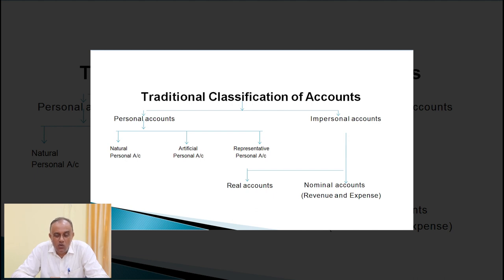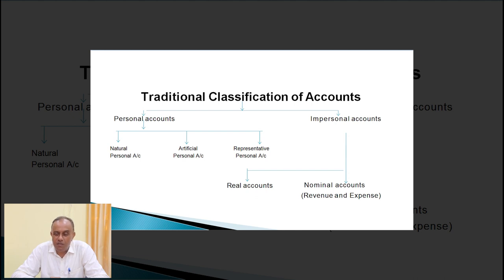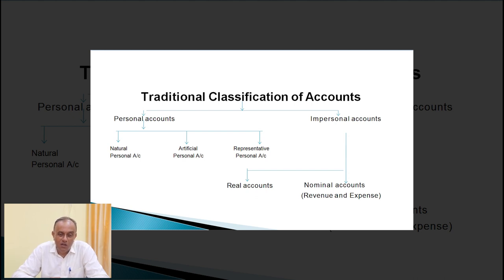Real accounts are those accounts which relate to assets, things, and property. There are two types of real accounts: some are visible or tangible, and some are intangible or not visible, but their value is accounted for. For example, land, building, plant, and machinery are examples of tangible and visible assets. Intangible assets such as goodwill, copyright, and trademark are also part of real accounts, as the value of those assets is accounted for as per accounting.